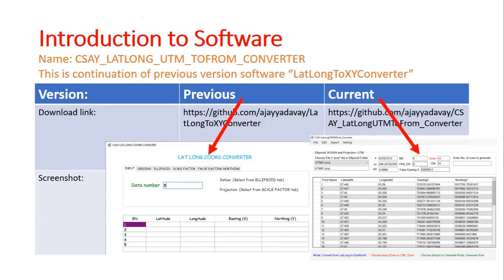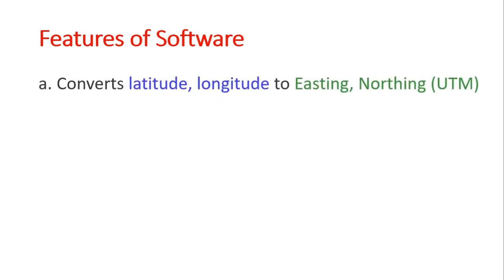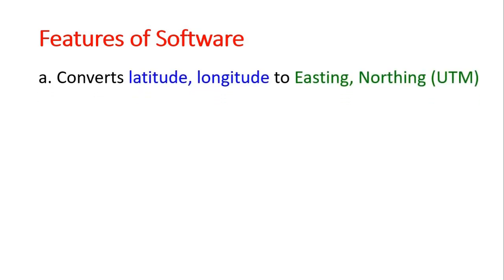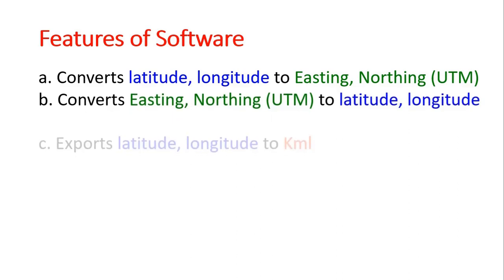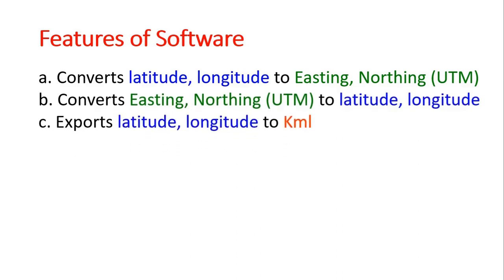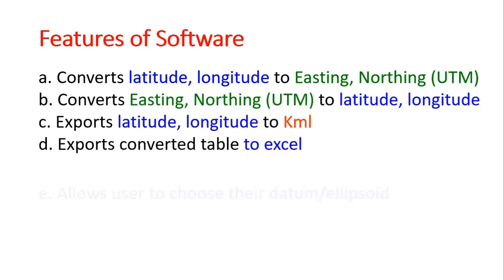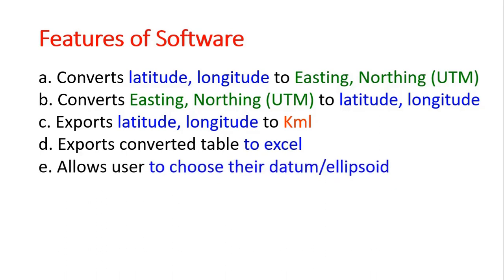These are screenshots of the current and previous versions. Features of the software: it converts latitude/longitude to datum, datum to latitude/longitude, exports latitude/longitude to KML and Excel files, and allows the user to choose their local datum ellipsoid or WGS 1984.